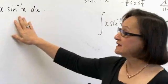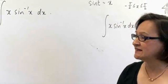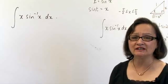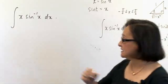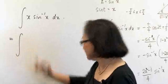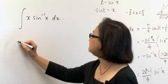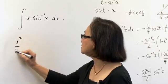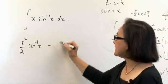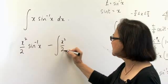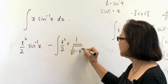Many students do not make the substitution for sine to the minus 1 of x as being equal to t, and this causes tedious calculations when integrating the integral of x sine to the minus 1 of x dx. Because this becomes the integral of x squared on 2 sine to the minus 1 of x, subtract the integral of x squared on 2, and the derivative of sine to the minus 1 of x becomes 1 over the square root of 1 minus x squared dx. And this often leads to very tedious calculations.